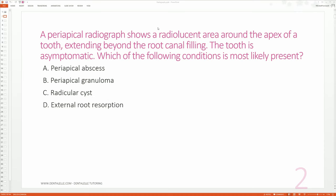Let's go through the first one together. A periapical radiograph shows a radiolucent area around the apex of a tooth extending beyond the root canal filling. The tooth is asymptomatic. Which of the following conditions is most likely present: A, B, C, or D?